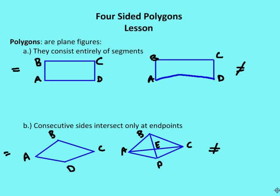So what are polygons? Polygons are plane figures. They consist entirely of segments. We have an example on the left-hand side and an example on the right-hand side. The example on the left-hand side is a polygon. The example on the right-hand side is not a polygon because it does not consist entirely of segments — side AD is not a segment. So again, they consist entirely of segments.